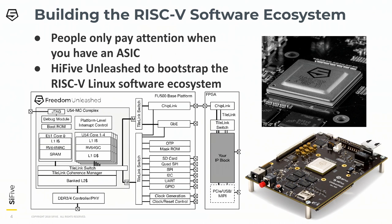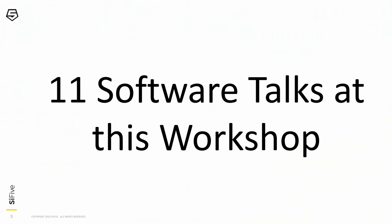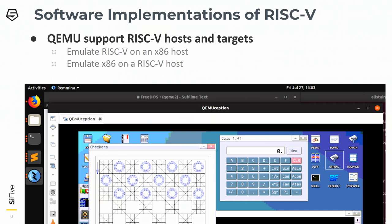That brings us to now, where we have a lot of software people. There are 11 software talks at this workshop, which is probably more than there have been at any of the other workshops. As a result, the software ecosystem is now too big to wrap up in one talk, so a lot of what I'm going to do here is point to other people's talks and summarize. We'll go through what's available for RISC-V, focusing on what's new.